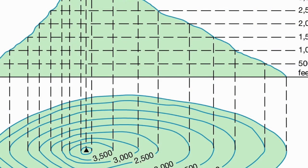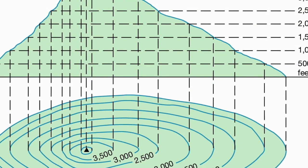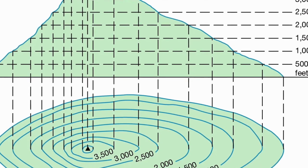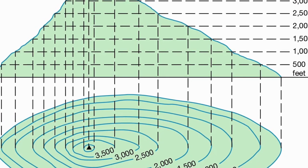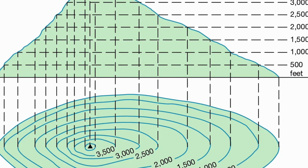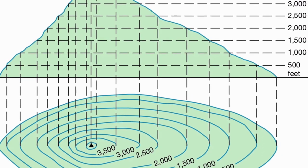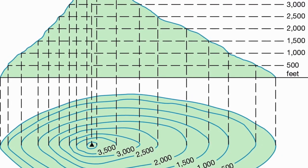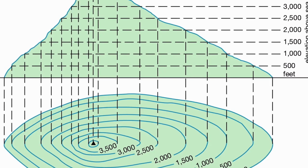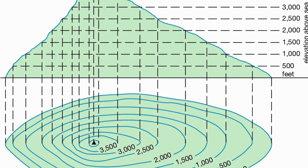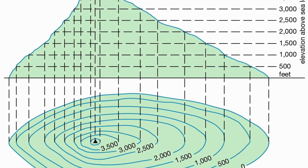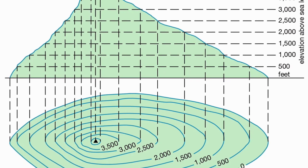After reading contour lines on a map for a while, you'll notice that a few distinct features pop out again and again. Learning to identify common contour line formations will help you read maps quickly and recognize the variation in terrain features that they represent on a map.